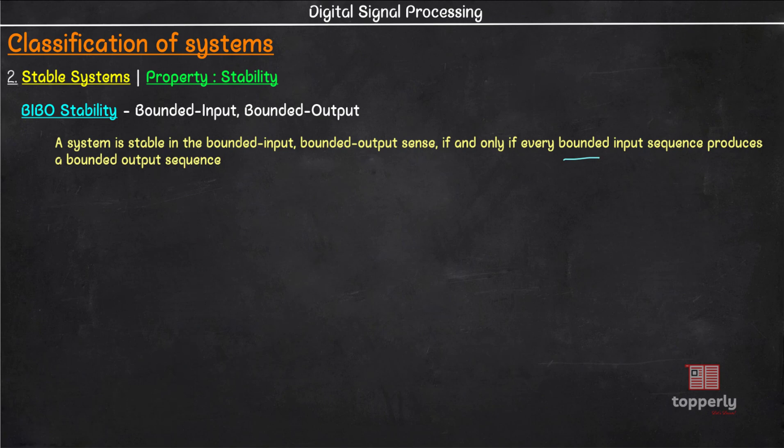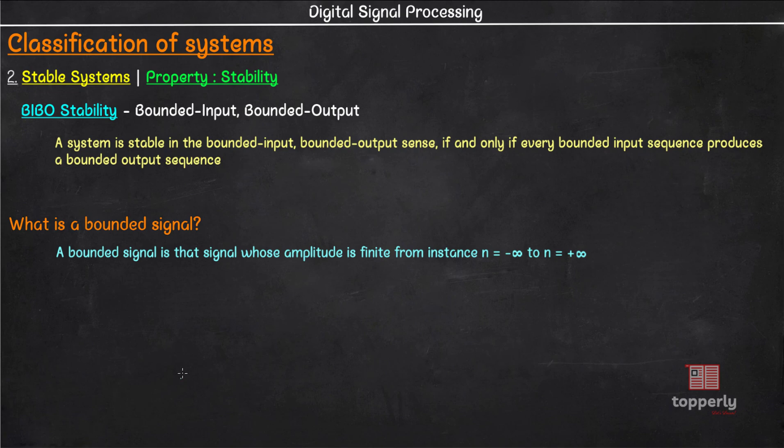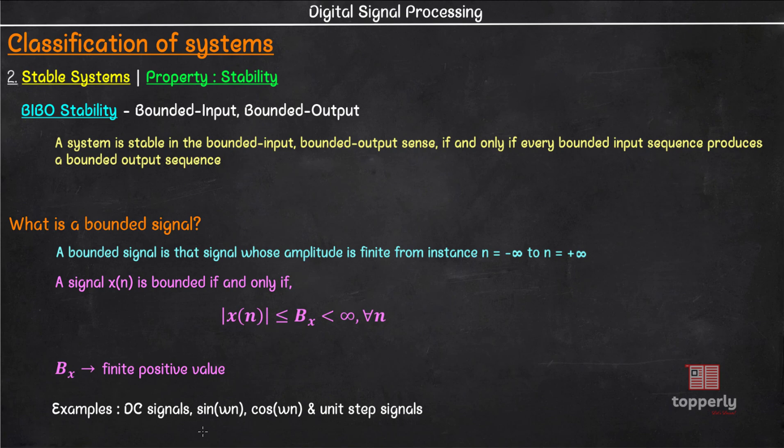So what is a bounded signal? A bounded signal is that signal whose amplitude is finite from instance n = -∞ to n = +∞. Defining this mathematically, a signal x(n) is bounded if and only if |x(n)| ≤ Bx < ∞ for all values of n, where Bx is some finite positive value. To understand this better, some examples of bounded signals are DC signals, sine and cosine signals, and unit step signals. The amplitude of all these signals are finite at all instances of time.